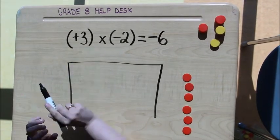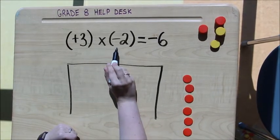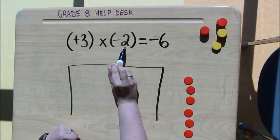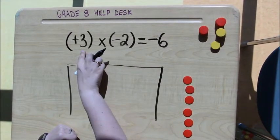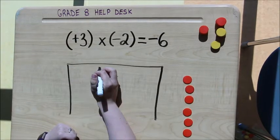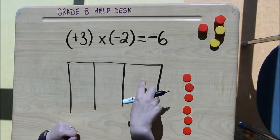In that bank I'm going to be putting 3 groups of negative 2 tiles or 2 of the red tiles. So I'm going to start off by dividing my bank up into my 3 groups. So my first group, second group, third group.